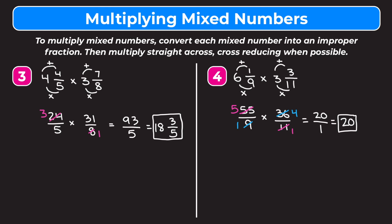That's all the examples we're going to do for multiplying mixed numbers. Hopefully this video has helped you. Just remember: when multiplying mixed numbers, first convert them to improper fractions, then multiply straight across, and cross reduce and simplify the fractions when possible.